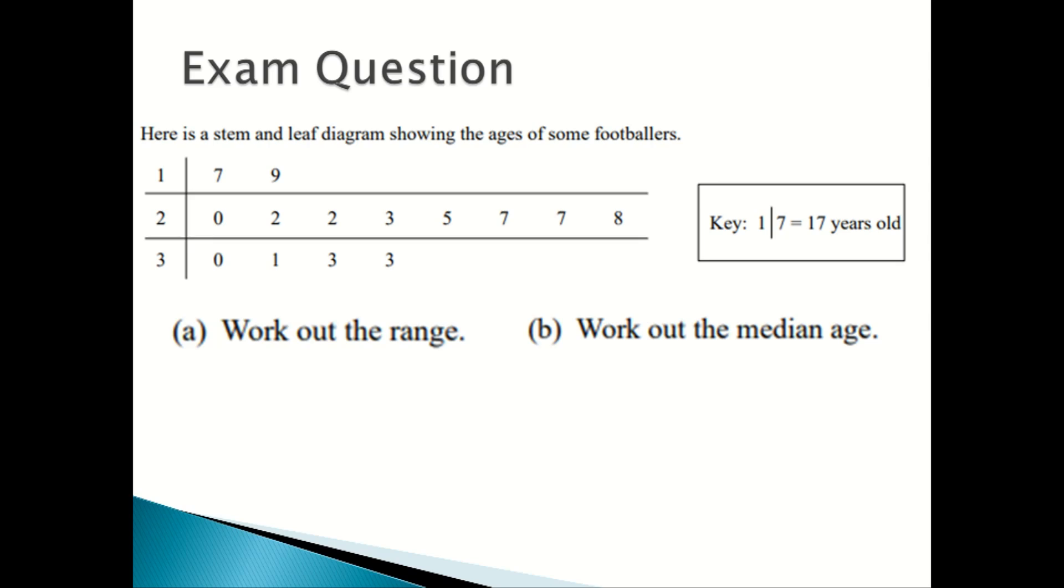The mode is the most repeated number. So range is the difference of the largest and smallest number in a list, and the median age is the middle number of an ordered list from smallest to largest.